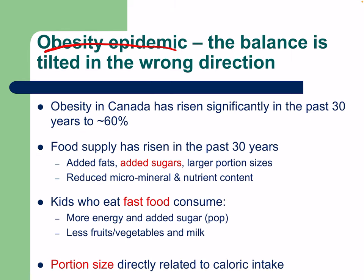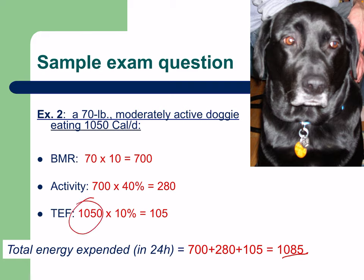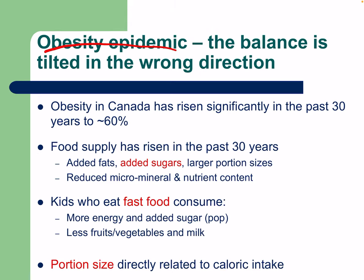This brings us to the obesity epidemic — a huge issue worldwide. Obesity occurs when caloric intake consistently exceeds expenditure over a prolonged period. In Canada, obesity has risen significantly in the past 30 years to approximately 60% of the population. The food supply has grown, food is abundant, and cheaper processed foods have added fats, added sugars, and larger portion sizes — think McDonald's — with reduced micronutrient content. So even though you're eating, you're not gaining much nutritional value beyond the calories.